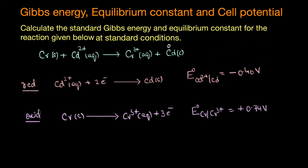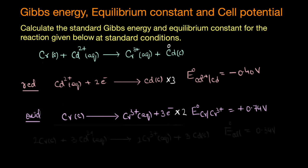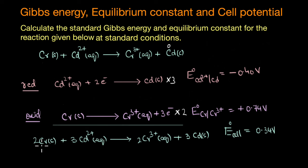The next step is to balance the number of electrons — the electrons lost by chromium must equal the electrons gained by cadmium. To achieve this, we multiply the reduction half reaction by 3 and the oxidation half reaction by 2. Adding these two reactions gives the final balanced redox reaction: 2Cr + 3Cd²⁺ → 2Cr³⁺ + 3Cd. The standard cell potential is +0.74 V − 0.40 V = +0.34 V, and a positive value confirms the reaction is feasible and spontaneous.